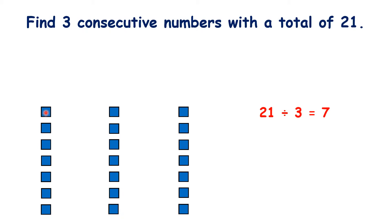Let's move a block from this group to this group. So now we have a group of 6, a group of 7 and a group of 8. So with 6, 7 and 8 we have consecutive numbers. And because 6 plus 7 plus 8 is 21, we have our answer.